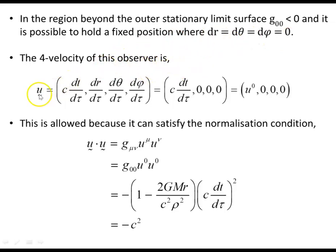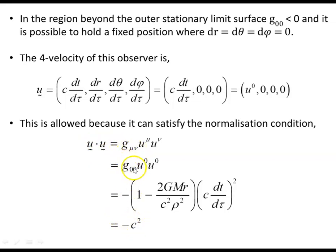The four-velocity for this observer has only the time component non-zero — spatial components are zero. The observer is stationary with respect to the black hole and is only moving in time. This condition is allowed because it satisfies the normalization condition: the scalar product, the inner product of the four-velocity with itself, gives us negative c squared. Because the time component of the metric in this region is negative, the normalization condition is satisfied. So an observer can hold a fixed position outside the black hole.